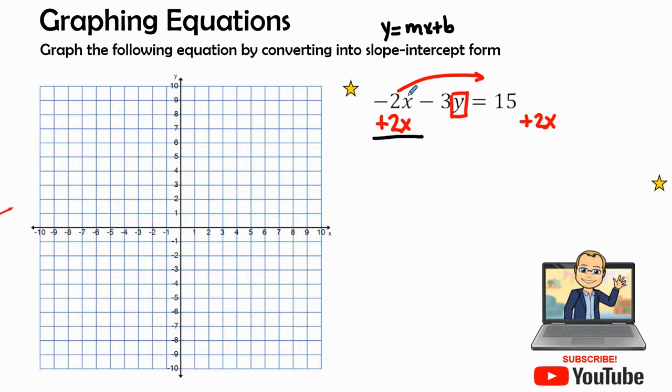Here we have negative 2x and positive 2x equals zero. And then now we have our negative 3y equals 2x plus 15.